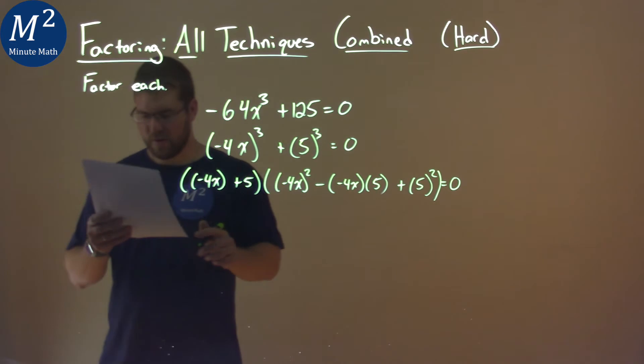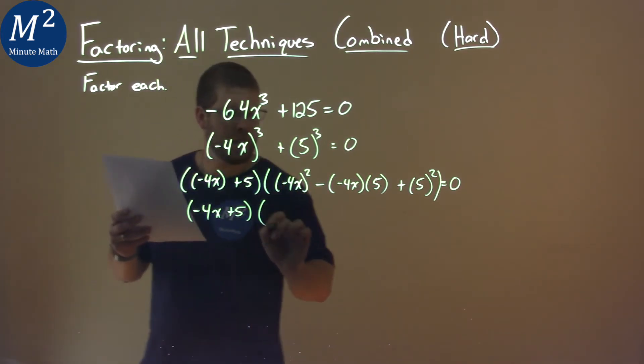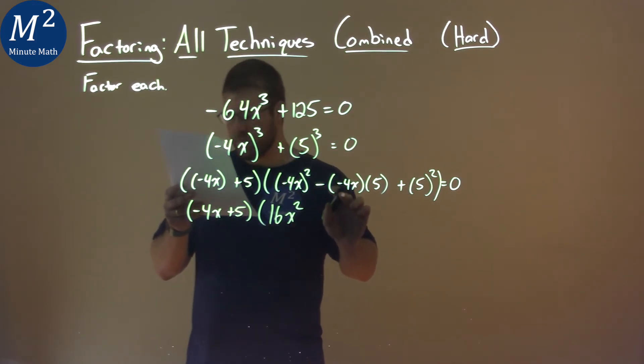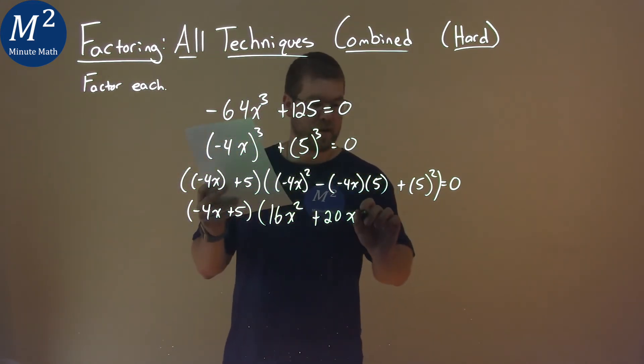So let's go simplify what we know. Negative 4x plus 5 here, and here, negative 4x squared is 16x squared. Negative negative is a positive, positive 20x, because 4 times 5 is 20, and 5 squared is 25.